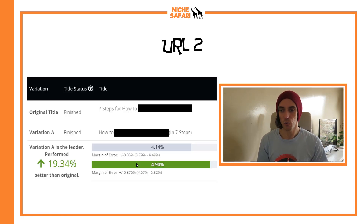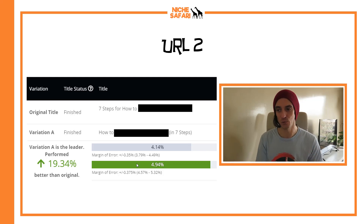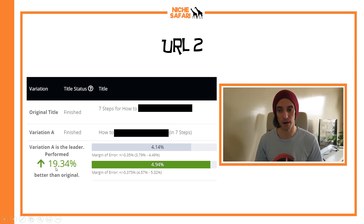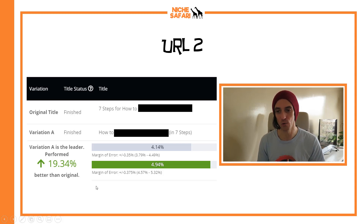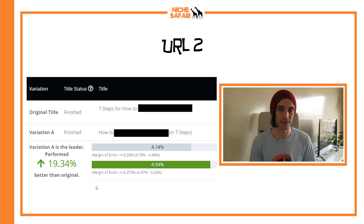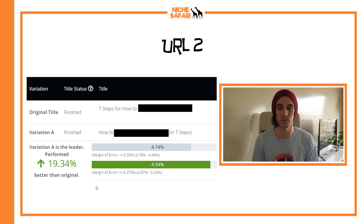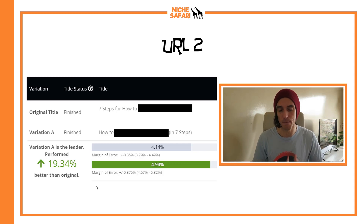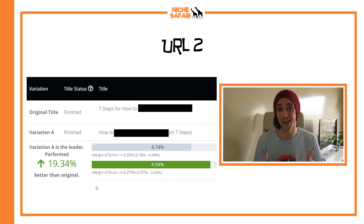For URL 2, I tried 'seven steps for how to [keyword]' versus 'how to [keyword] in seven steps.' The new variation performed a lot better — 20% better — which is really cool. Once the test is completed, it depends how many clicks you get for how long they run the test, since they need a good confidence interval. You may have to wait a couple of weeks or even months if your page isn't getting many clicks.